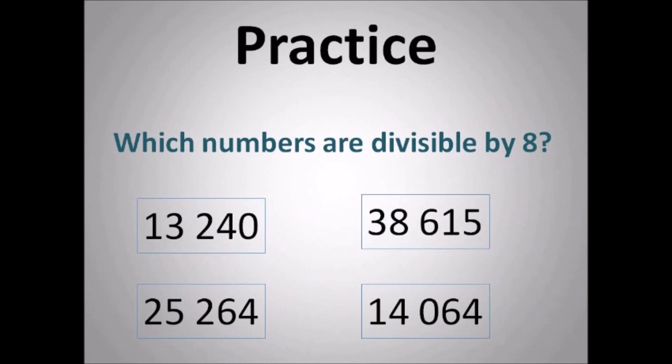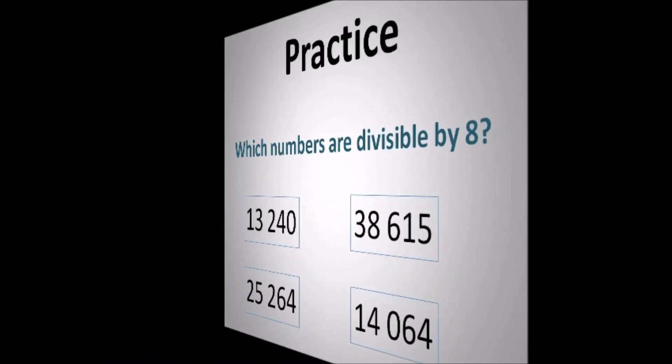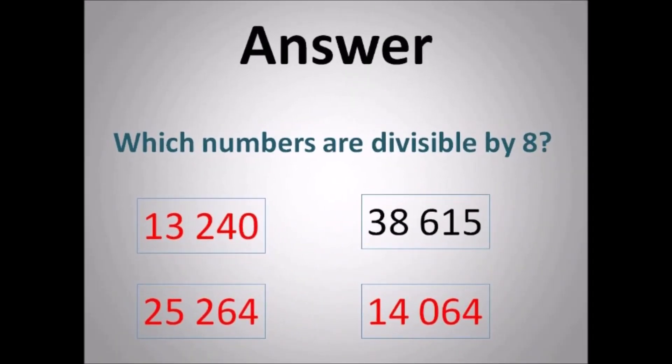Which numbers are divisible by 8? Look at the last three digits. If they're divisible by 8, then the number is divisible by 8. So for 13,240, the last three digits 240 are divisible by 8. For 25,264, the last three digits 264 are divisible by 8. For 14,064, the last two digits 64 are divisible by 8. So those three are the answers. 38,615 cannot be.